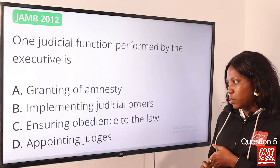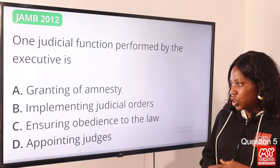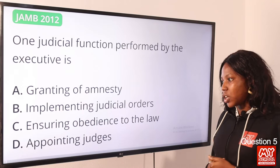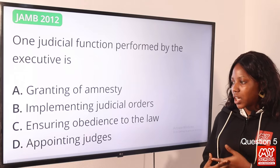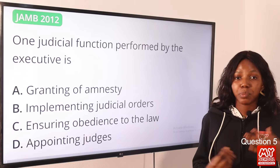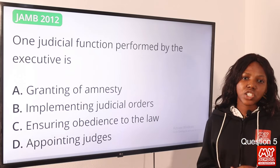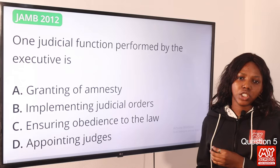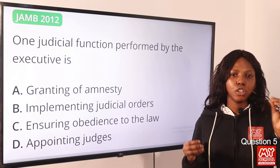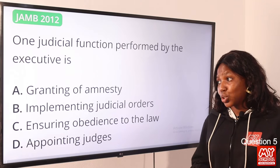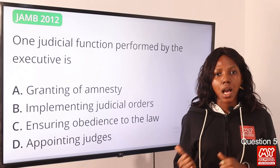Implementing judicial orders is a function of the judiciary. Ensuring obedience to the law is a function of the executive. Appointing judges — the governor of each state appoints judges but on the recommendation of the National Judiciary Council. So the answer to this question remains option A, granting amnesty.